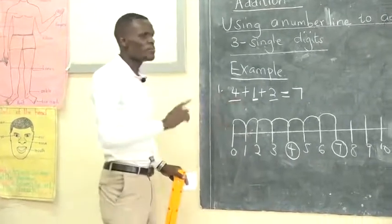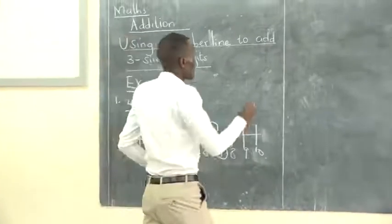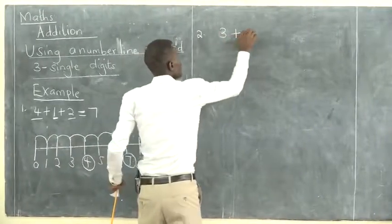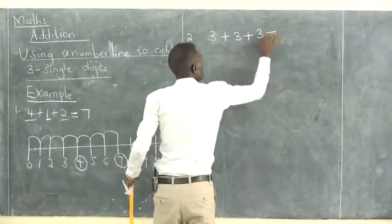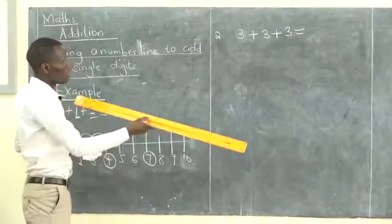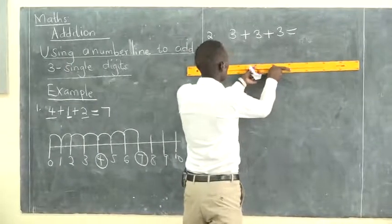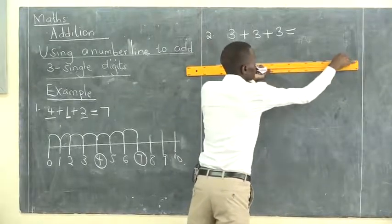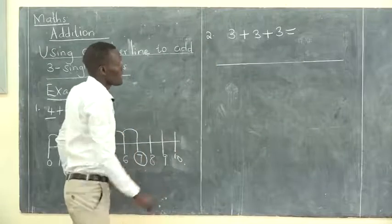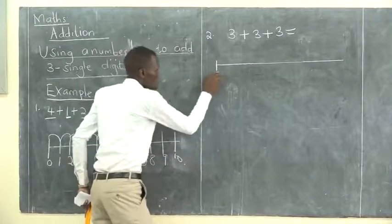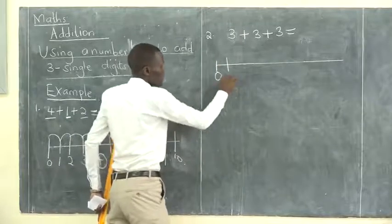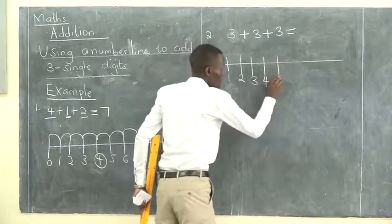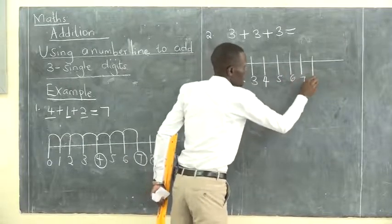Remember always to start from zero. Now let's have example two: three plus three plus three. Take your ruler — don't use freehand — draw a straight line. This is my straight line. Show the numbers on the number line, and remember we always start from zero.